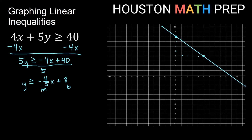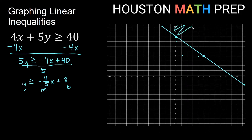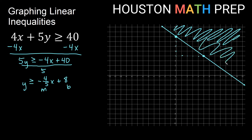We graph the line as the equal-to part of the inequality. The greater than part means everything on one side of the line is also a solution. When y is greater than something, bigger y values are above, so anything above the line in our xy-plane is also a solution. This is our graphed solution for 4x plus 5y is greater than or equal to 40.